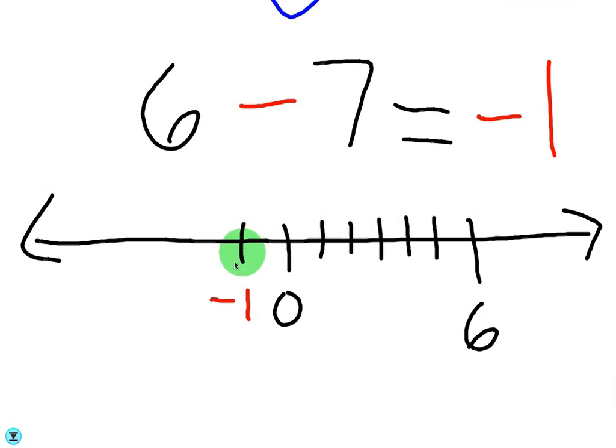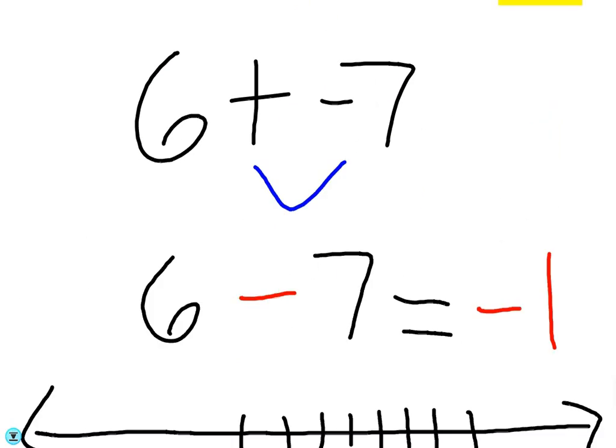Again, if you're taking a smaller number and subtracting a bigger one, the answer is going to be negative. So there's our first example. When you add a negative, you just end up subtracting it.